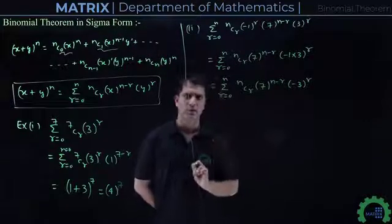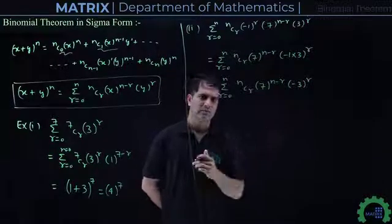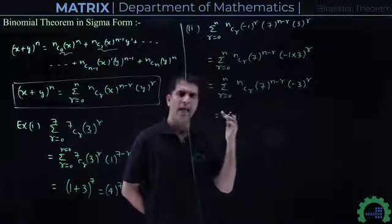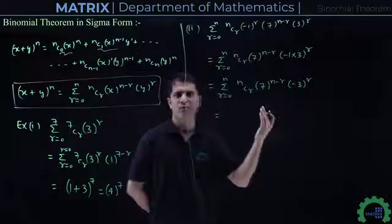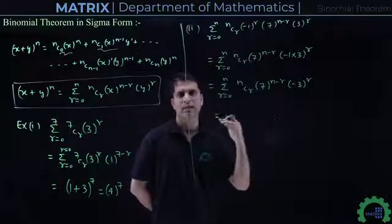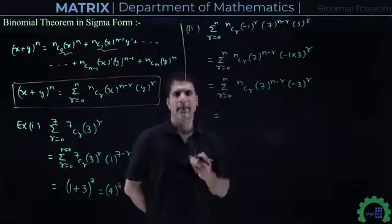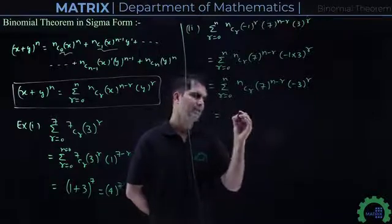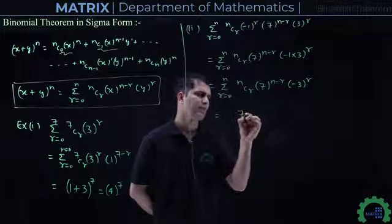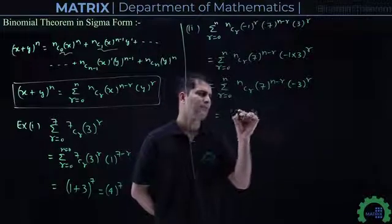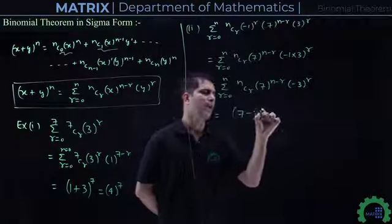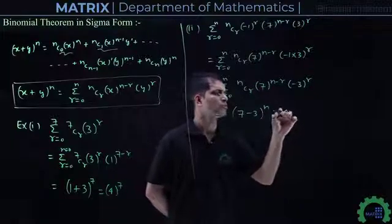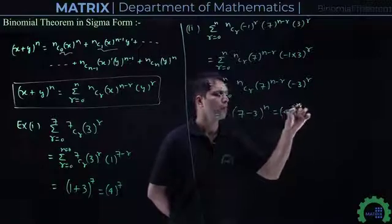Now this is converted to standard form. So directly we can write this as (X + Y)^N, where N = N. That means this equals (7 + (-3))^N = (7 - 3)^N = 4^N.